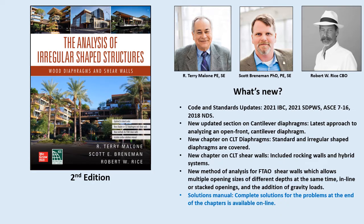Residential and commercial buildings have become more complex than structures built only a few decades ago. To create architecturally appealing structures, horizontal and vertical offsets in the diaphragms, multiple reentrant corners, multiple irregularities, and fewer vertical lateral force-resisting elements have become commonplace. The structural configurations of many modern buildings require very complex lateral load paths. Most texts and publications currently available only address simple rectangular diaphragms and shear walls, and methods for those do not easily adapt to complex diaphragm and shear wall layouts in irregular-shaped structures.